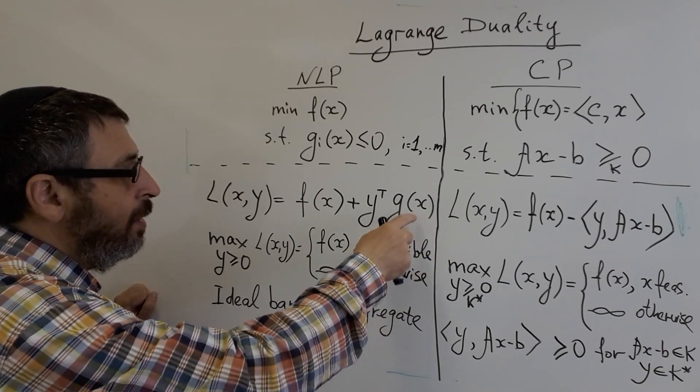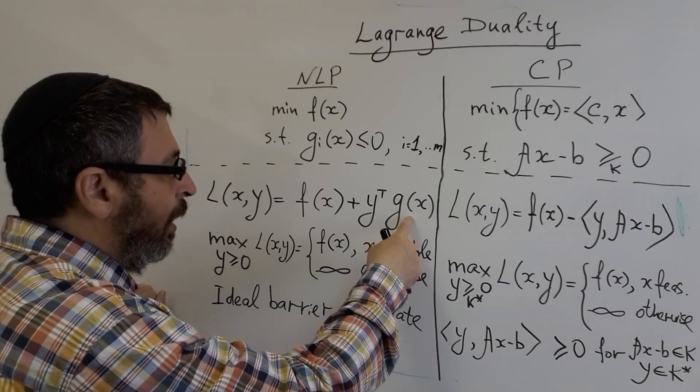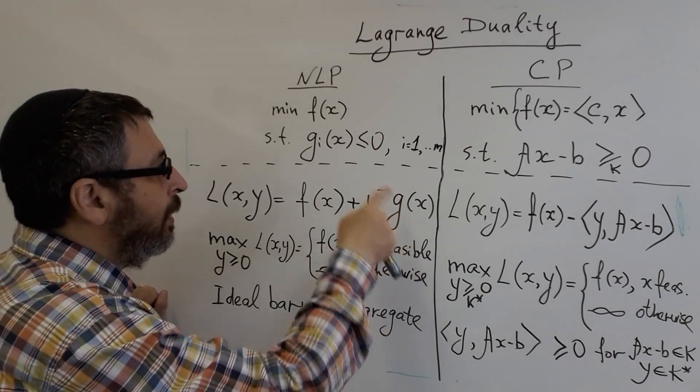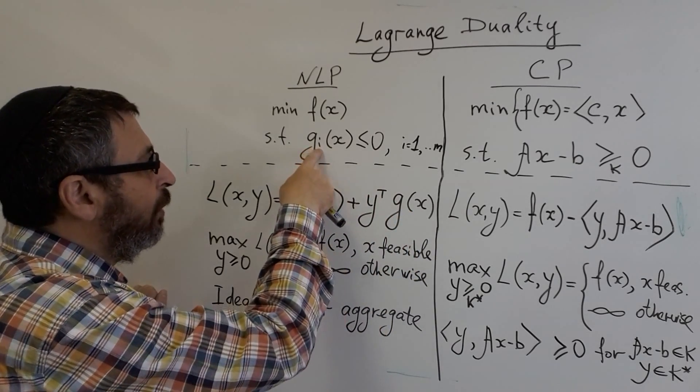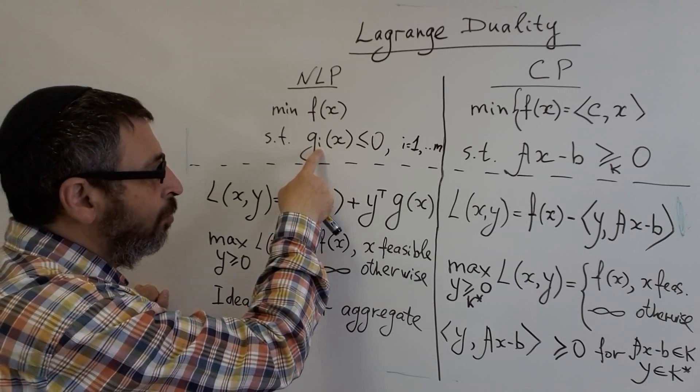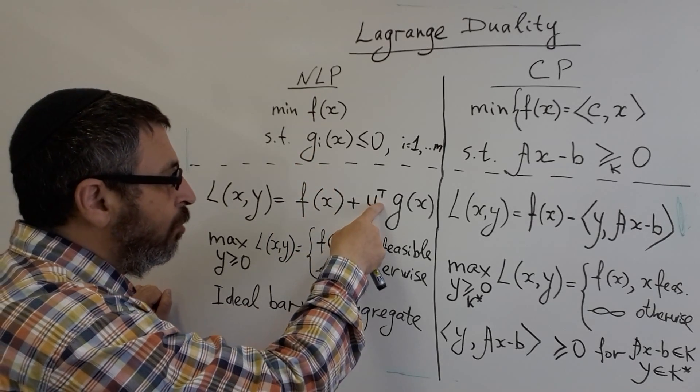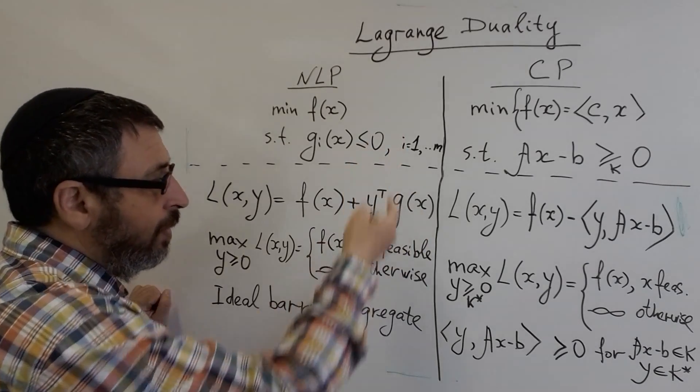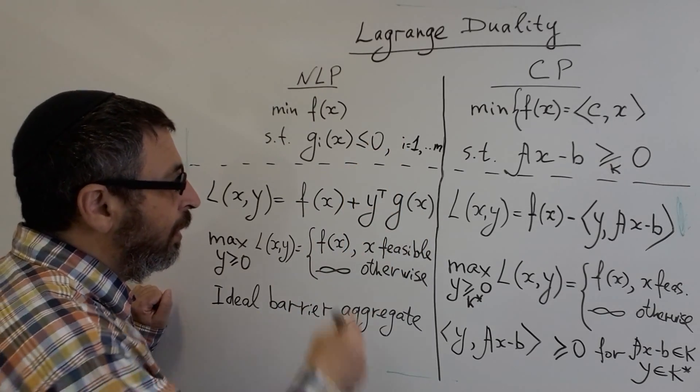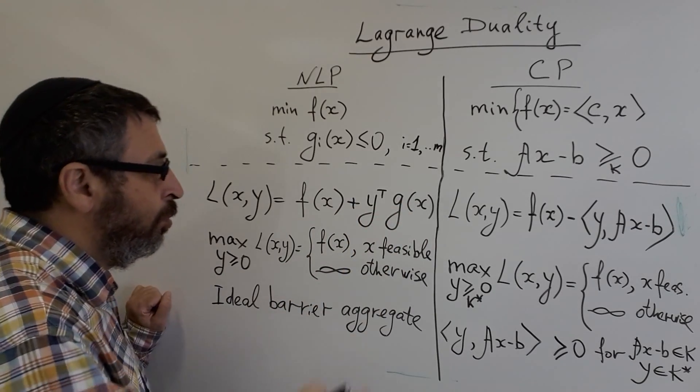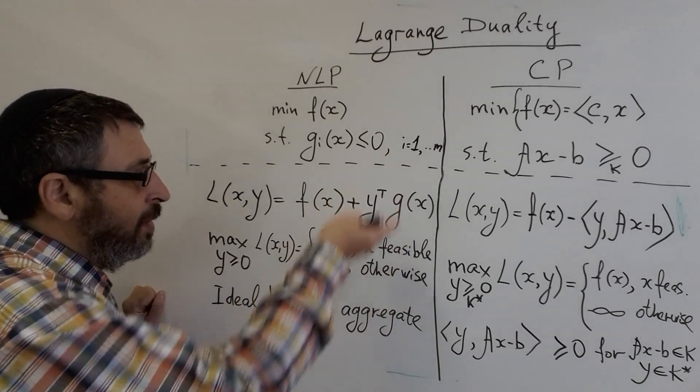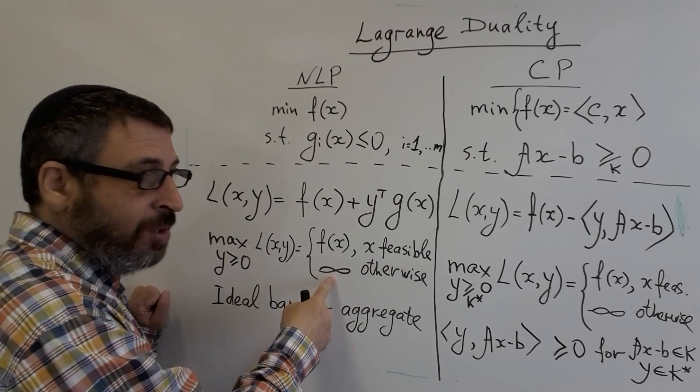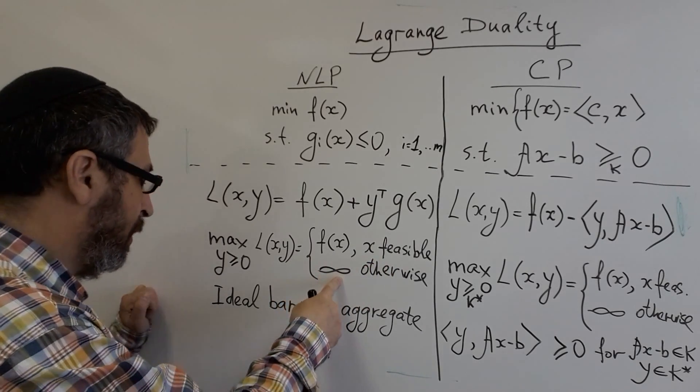If any of constraints is violated, meaning some constraint is greater than zero, we can choose corresponding multiplier positive and as large as we want, and set other multipliers to zero. This means that increasing it we can achieve as large a number as we want, meaning the maximum is infinity.